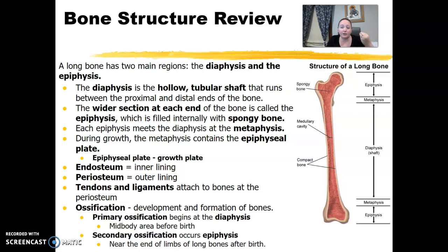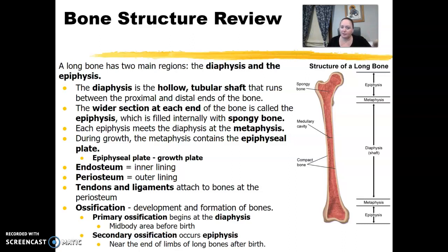As you're growing, pediatrics have that epiphyseal plate, or growth plate, that as adults is closed. Inner lining, outer lining — endosteum or periosteum. The tendons and ligaments attach to the bones at the periosteum. And just a quick review of the ossification process: there's primary and secondary. One happens before birth and one after. Primary occurs before birth at the diaphysis, and secondary occurs after birth near the ends of the long bones, at the epiphysis.